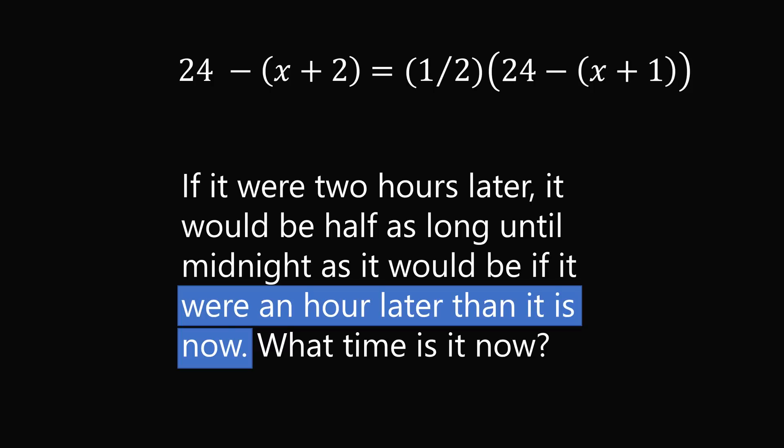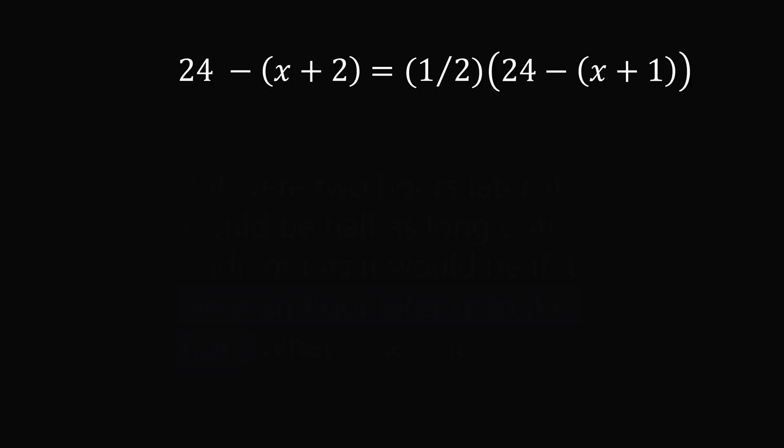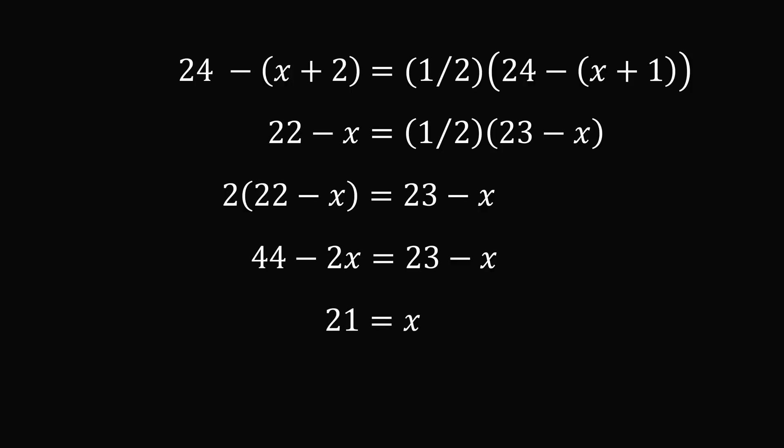We now have an equation and we need to solve for x. We'll first simplify the parentheses, then we'll multiply by 2 on both sides. We'll distribute. Now we'll bring the x terms to the right hand side and the constant terms to the left hand side. So we get 21 is equal to x.